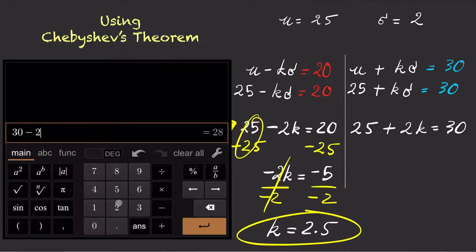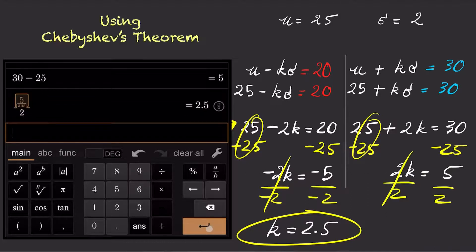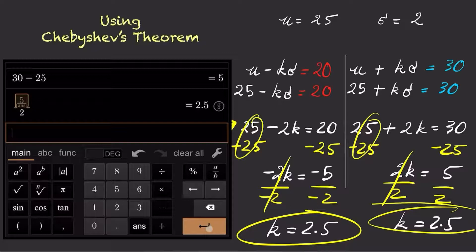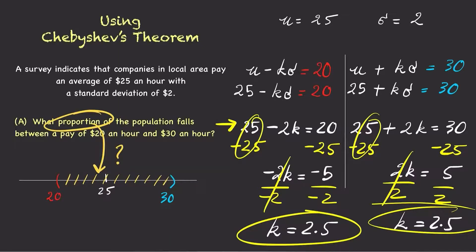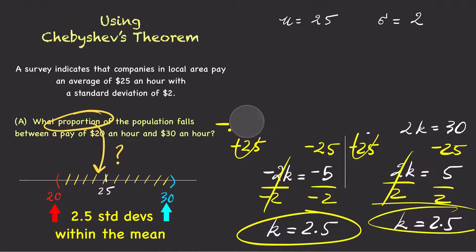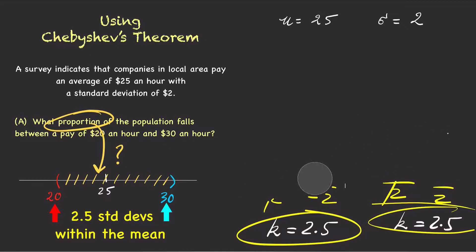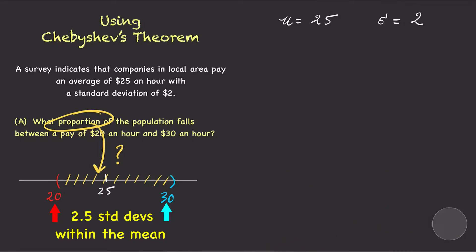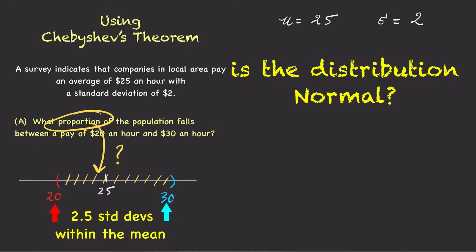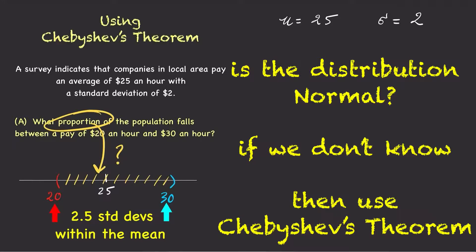Likewise, k is also 2.5 for the upper boundary. Since k equals 2.5, we know that both the lower boundary of $20 and the upper boundary of $30 are within 2.5 standard deviations away from the mean. However, we cannot use the empirical rule to find a proportion since we do not know if the distribution is normal.